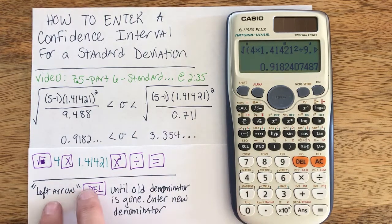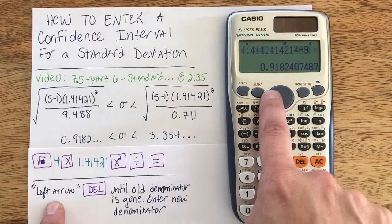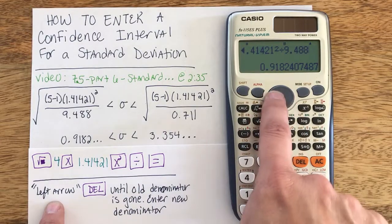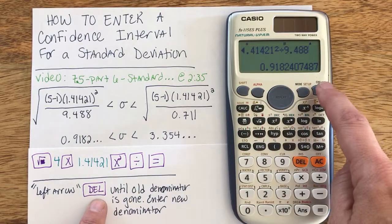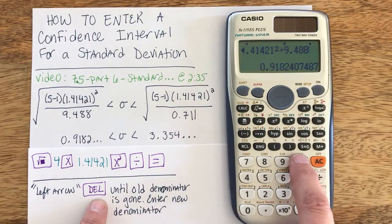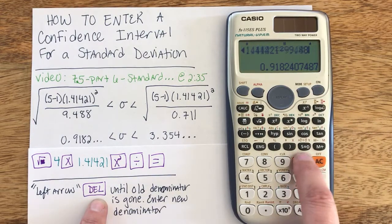Then what I'm going to do is basically left arrow into the problem I just typed. Hit left arrow once on the replay button, and now I'm going to hit the delete button DEL, found right above the time symbol, until each value of the denominator has disappeared.